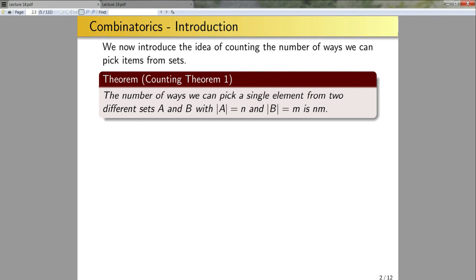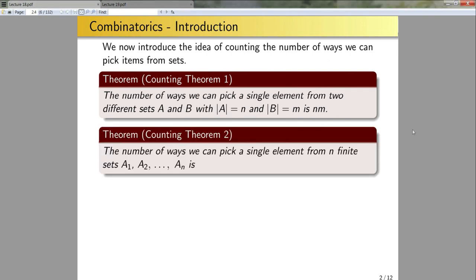I'm not going to prove this theorem — it should be fairly obvious. If you wanted to list out all the possible ways you can pick a single element from these two sets, you can build a table with A and B as the columns and rows, and that table will have exactly N times M elements. We can generalize this counting theorem to hold for an arbitrary finite number of sets: the number of ways to pick a single element from N finite sets A1 through AN is the product of their cardinalities.